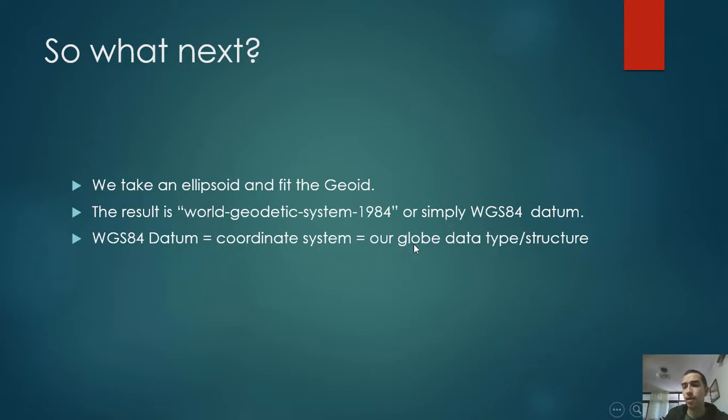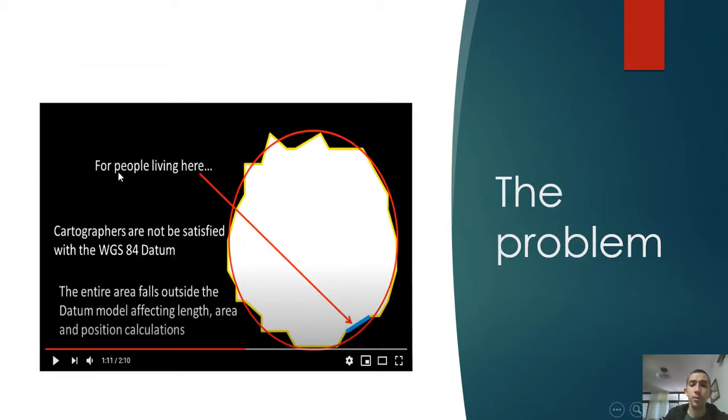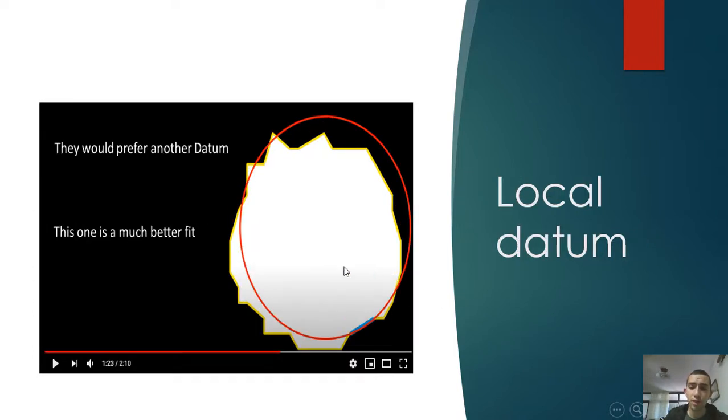This picture is how it will look when you take an ellipsoid to fit the geoid. But the problem is for people who live in certain areas, the ellipsoid is not fitting correctly, so they may create a local datum. I don't know if that's the best idea because there is a standard global datum.